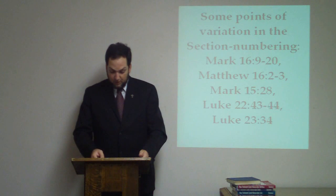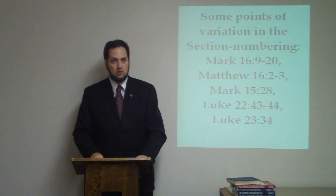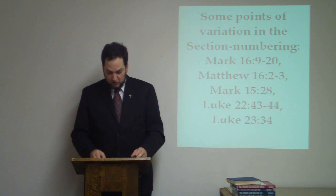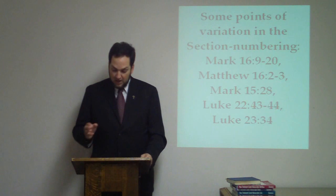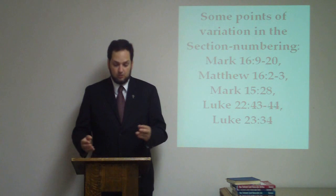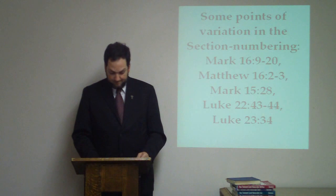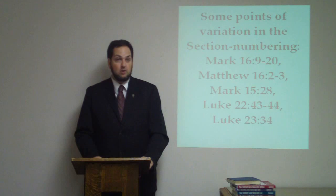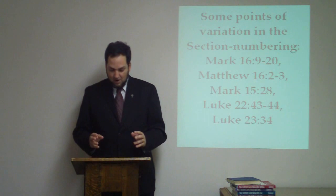It's interesting to note that the lack of a separate section number from Matthew 27:49 tells us something about the text that Eusebius used when he prepared his canons. His text did not contain the extra material about the spear-piercing that is included in Matthew 27:49 in Codex Vaticanus and Codex Sinaiticus. If Eusebius' text had included that material, it would have been assigned its own section number and placed in Canon 7, which contains parallels found in Matthew and John, alongside the section number of the passage of John that contains John 19:34. This implies that Eusebius did not use a text of Matthew like the text found in Vaticanus and Sinaiticus.